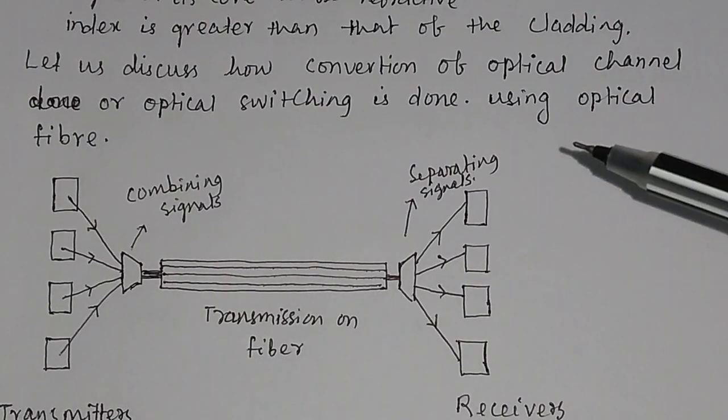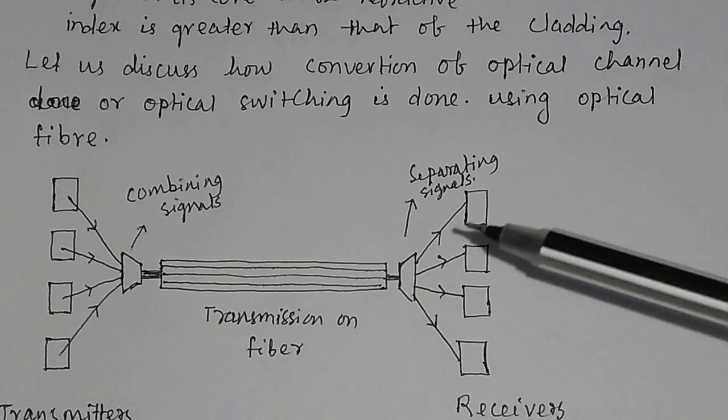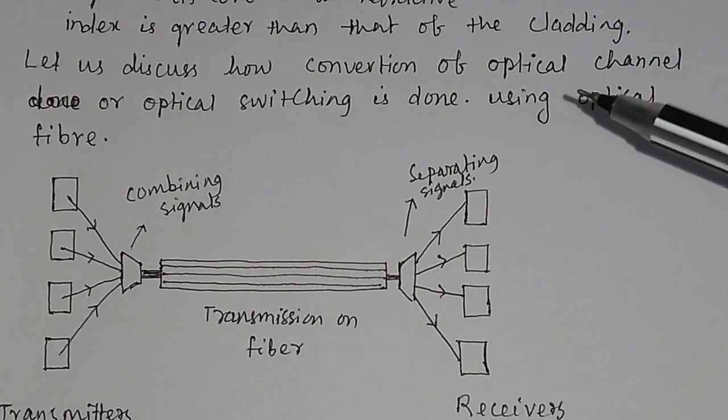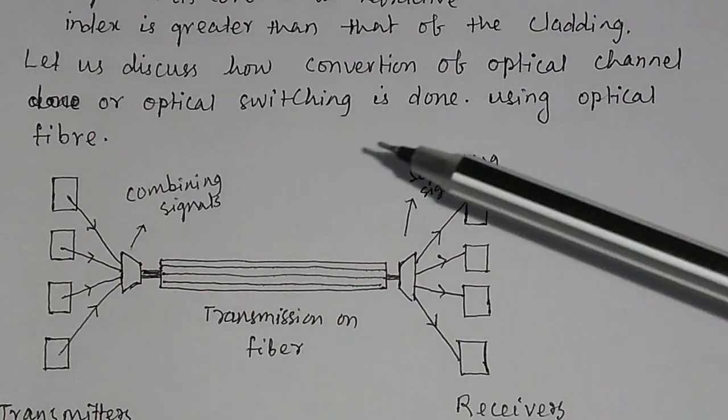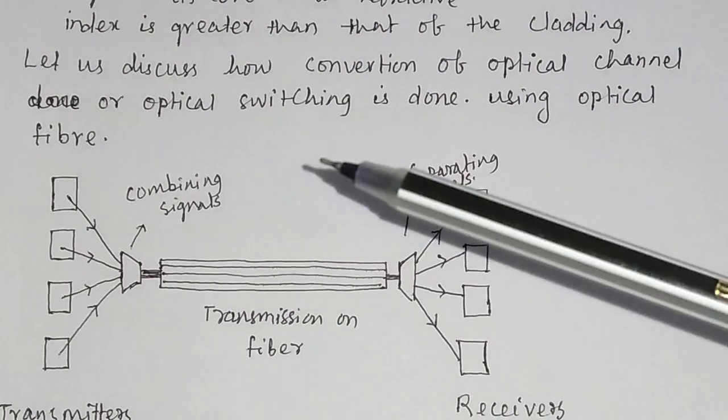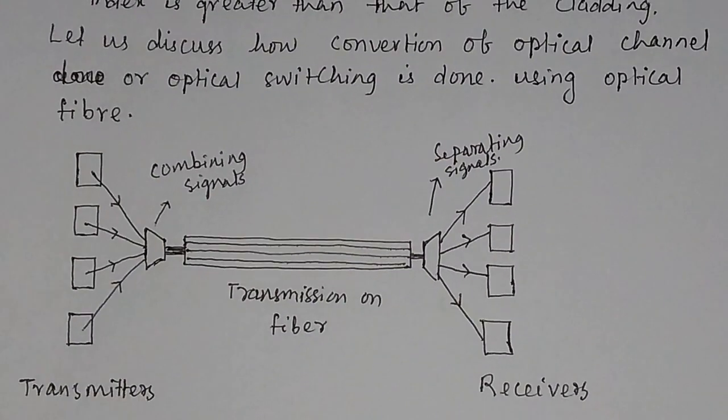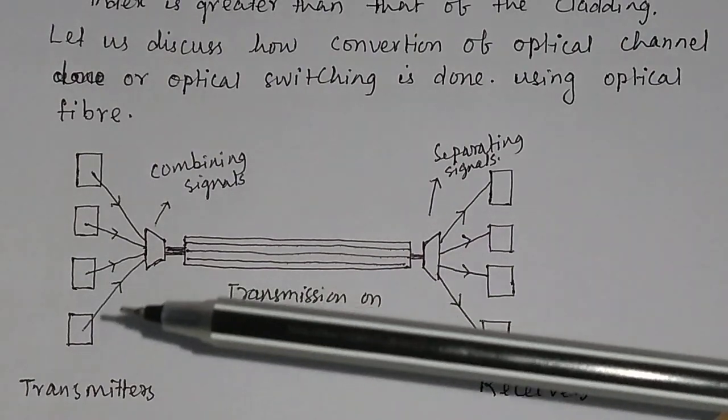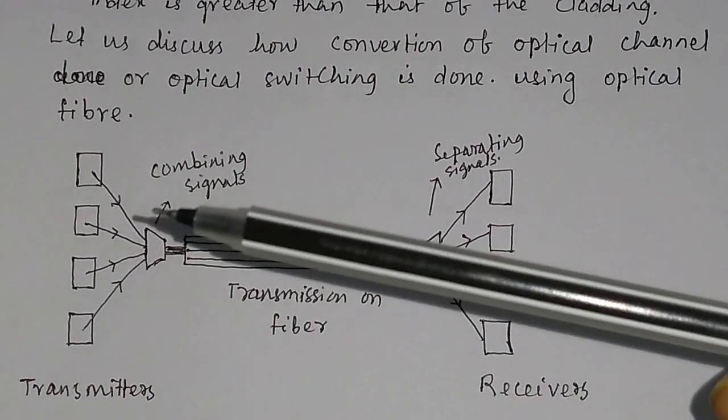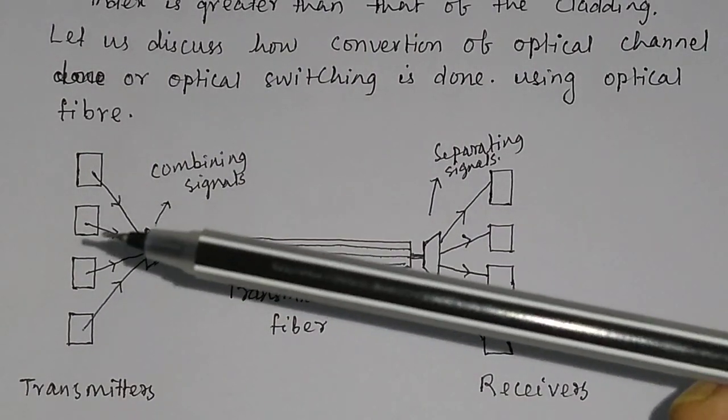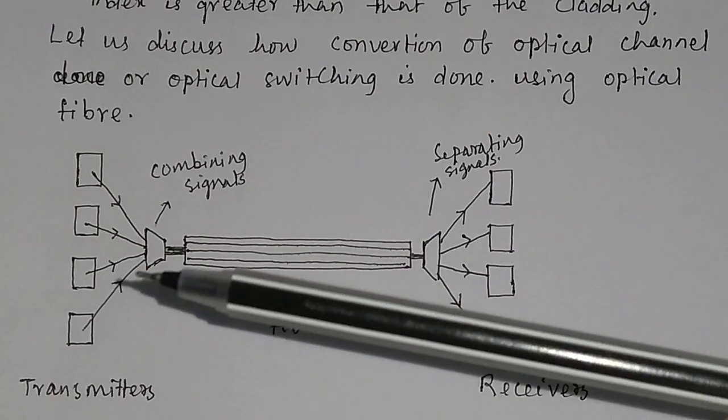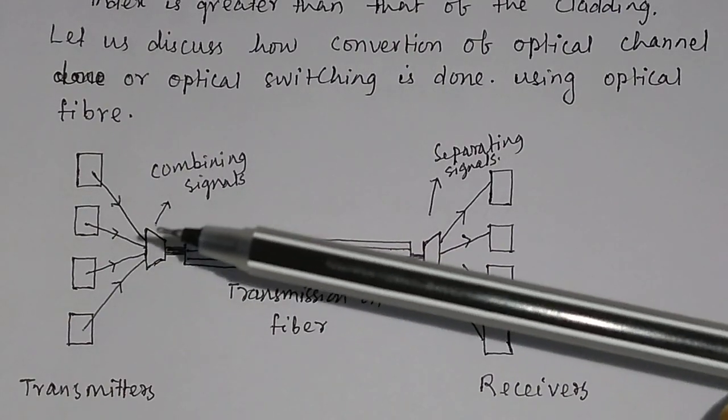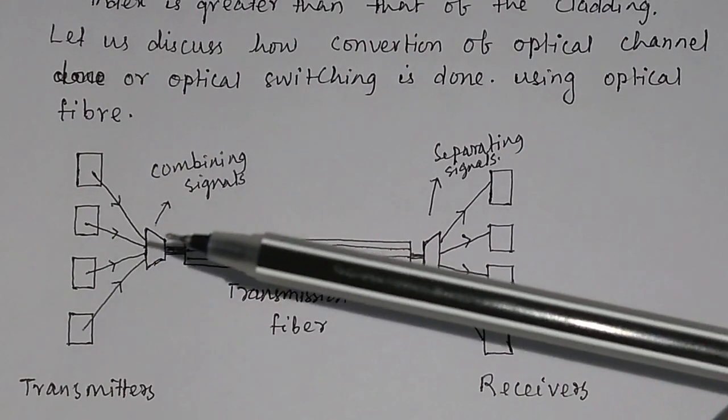Now let us discuss how this optical fiber can be converted to optical channel or what is the magic of the optical switching. This is the transmitters which transmit signals. These are the signals or electromagnetic waves and this is a device for combining the signal. Here the signal is combined.